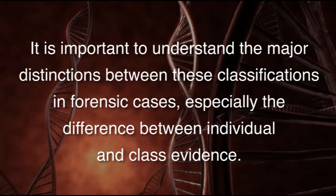As you can see, some pieces of evidence can fall into multiple categories. But it is important to understand the major distinctions between these classifications in forensic cases, especially the difference between individual and class evidence. It is critical that forensic scientists and jury members understand this distinction, as the ability to pinpoint evidence to a single person can make the difference between a conviction and an acquittal.